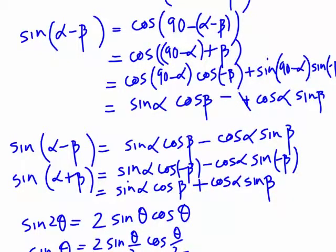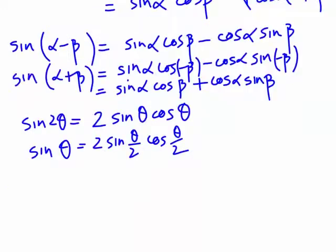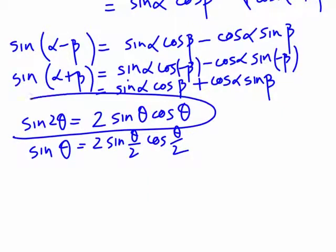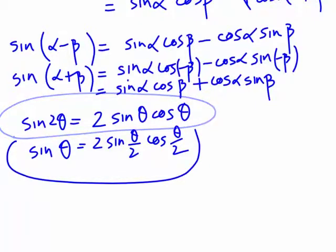Letting α = β = θ in the sine addition formula gives the double angle result: sin 2θ = 2 sin θ cos θ. Halving gives the half angle result: sin θ = 2 sin(θ/2) cos(θ/2).